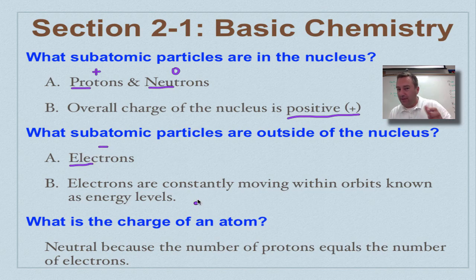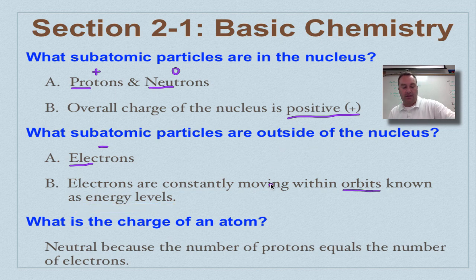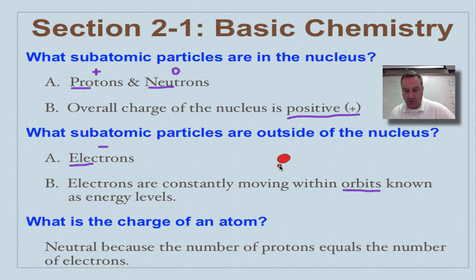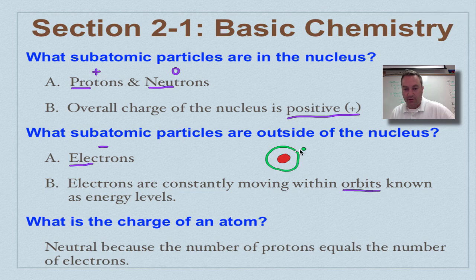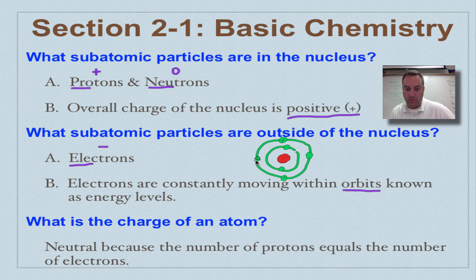Which subatomic particles are going to be outside the nucleus? Those are the electrons. Remember, electrons have a negative charge. Electrons have a lot of energy. They're always constantly moving around. And for us, we're going to say that they're in orbits known as energy levels. So let's think of a nucleus as the center of a solar system, and let's say that the electrons are moving around like the planets do around our sun.